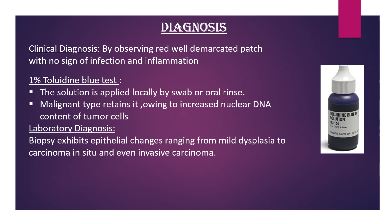Now let's learn about diagnosis. Clinically, we can diagnose erythroplakia by observing a red, well-demarcated patch with no signs of infection and inflammation. We can also perform a 1% toluidine blue test, where the solution is applied locally by swab or oral rinse; malignant tissue retains it owing to the increased nuclear DNA content of tumor cells. In laboratory diagnosis, biopsy exhibits epithelial changes ranging from mild dysplasia to carcinoma in situ and even invasive carcinoma.